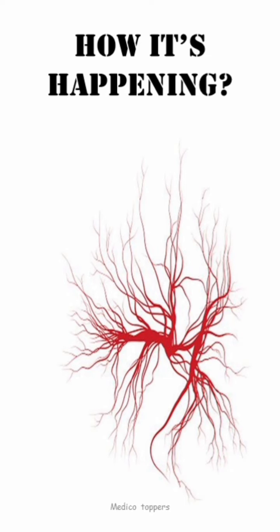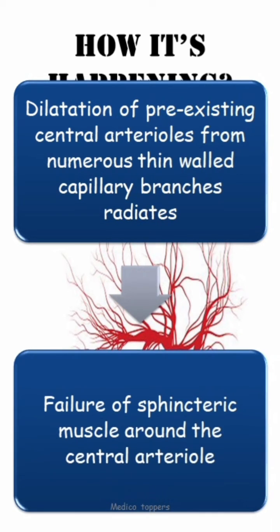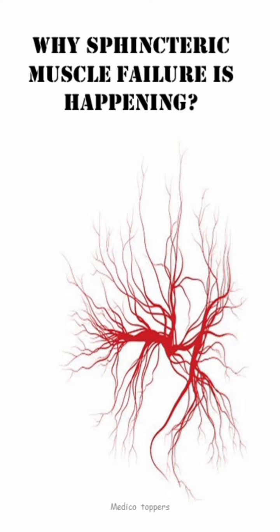The next question is: how is this happening? It is nothing but the dilatation of pre-existing central arterioles, and it is occurring because of the failure of the sphincteric muscle around the central arteriole. The next question is: why is sphincteric muscle failure happening? Still, there is no clear-cut pathology, but there are a few hypotheses indicating this sphincteric muscle failure.